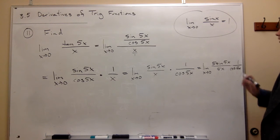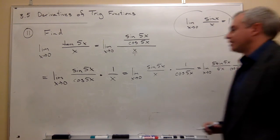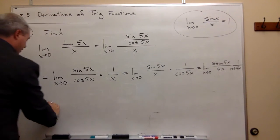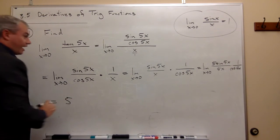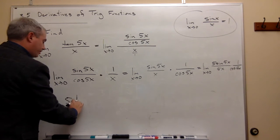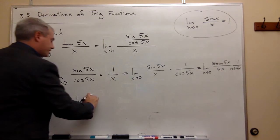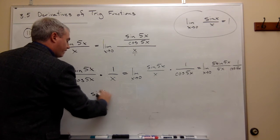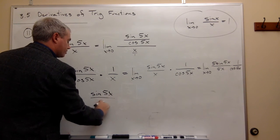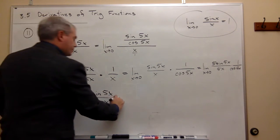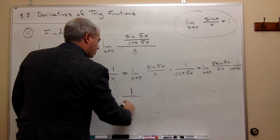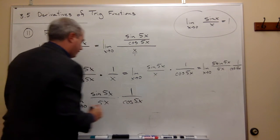Okay, the 5 can come outside of the limit, so let's rewrite it again. We can write this as 5 times the limit as x goes to 0 of sine of 5x over 5x times 1 over cosine of 5x.